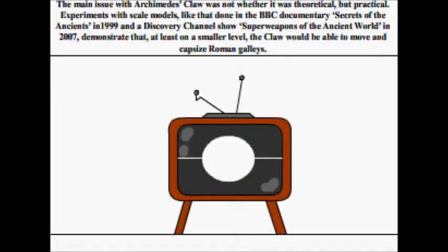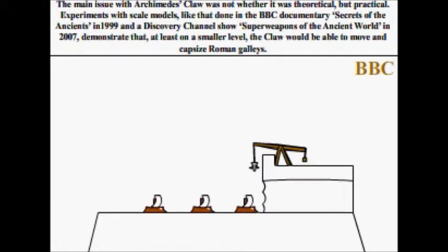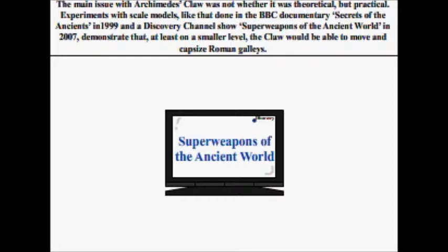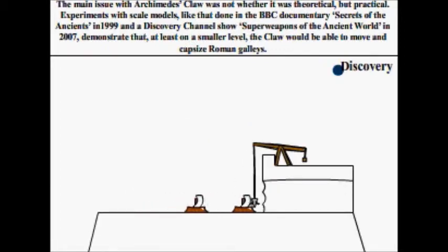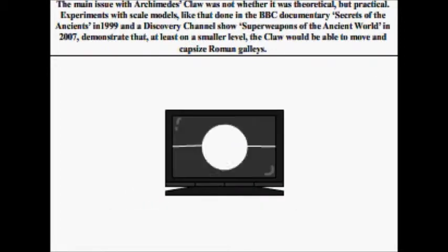The main issue with Archimedes' claw was not whether it was theoretical, but practical. Experiments with scale models, like that done in the BBC documentary Secrets of the Ancient World in 1999, and a Discovery Channel show Super Weapons of the Ancient World in 2007, demonstrate that, at least on a smaller level, the claw would have been able to move and capsize Roman galleys.